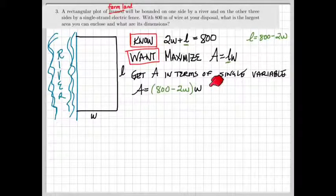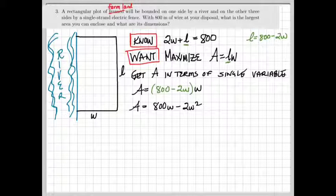Substituting into the original equation for area, we get area equals 800 minus 2w times w. Then we distribute w to both terms to get the area is 800w minus 2w squared. This is our objective function that we want to maximize.